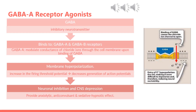GABA is the major inhibitory neurotransmitter in the mammalian central nervous system. GABA-induced physiologic functions are mediated by at least two distinct classes of membrane-bound receptors: ionotropic GABA-A receptors and metabotropic GABA-B receptors. GABA-A receptors are ligand-gated ion channels that modulate conductance of chloride ions through the cell membrane upon the binding of GABA. This leads to membrane hyperpolarization, which increases the firing threshold potential and reduces the likelihood of generating an action potential, leading to neuronal inhibition and CNS depression.